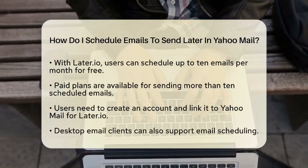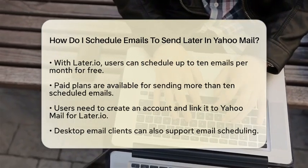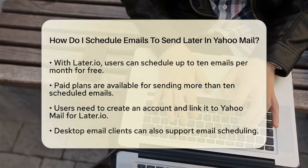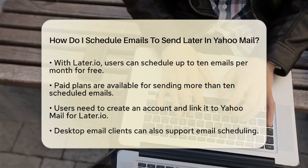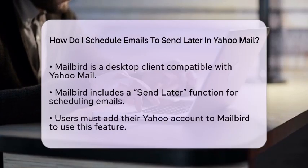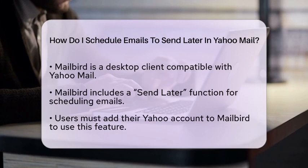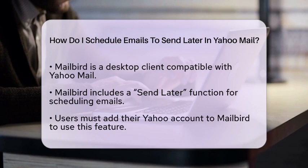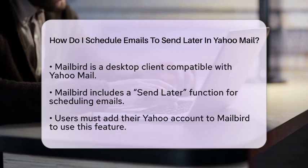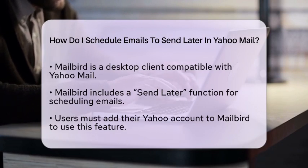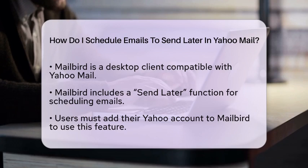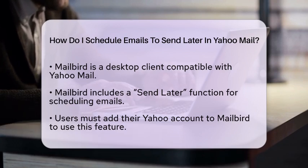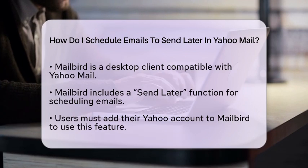Another option is to use desktop email clients that support scheduling features. Yahoo Mail works with the Internet Message Access Protocol, which means you can add your Yahoo account to desktop clients like Mailbird. Mailbird has a Send Later function that allows you to compose your email and select when it should be sent. After adding your Yahoo account to Mailbird, simply write your email and click the clock icon next to the Send button to choose your desired sending time. The email will then be sent automatically at the scheduled time through your Yahoo account.